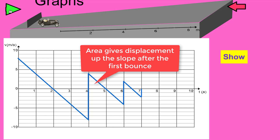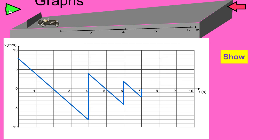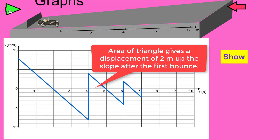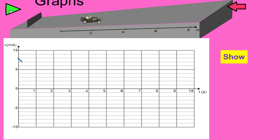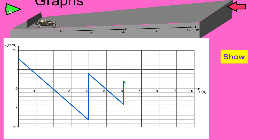The area of the triangle after the first bounce is considerably less than the area of the first triangle — that's our physics working, because the displacement up the slope after the bounce is going to be less since we've lost energy. One times four is four, and since it's a triangle we halve it to get two meters. So the car goes two meters up the slope after the bounce. Let's check that: eight meters up, eight meters down, bounce, two meters up — and that's correct.